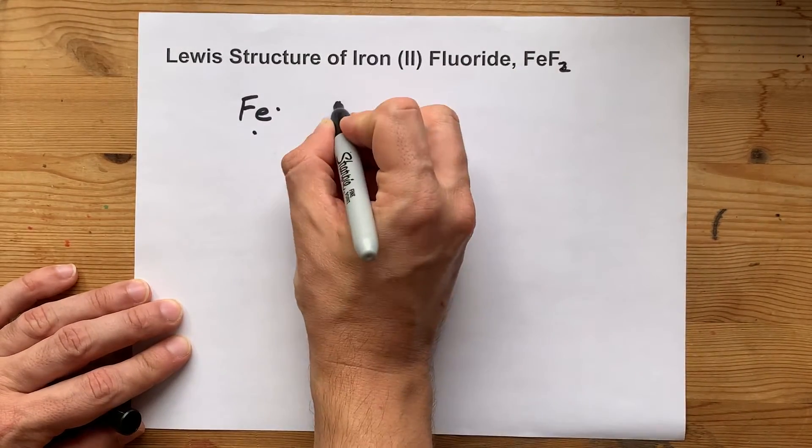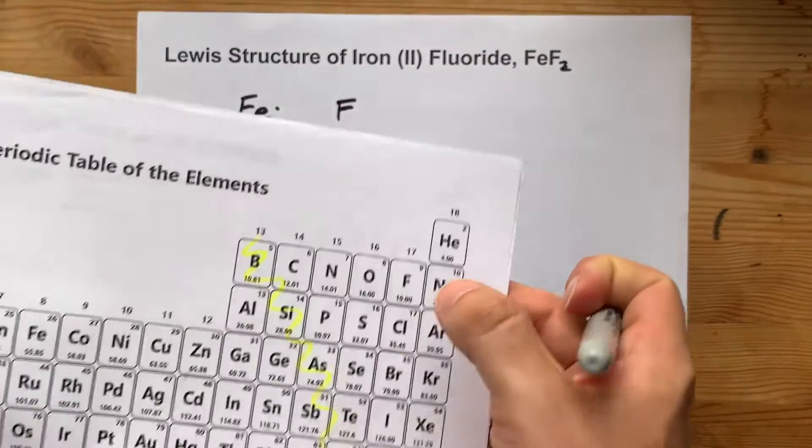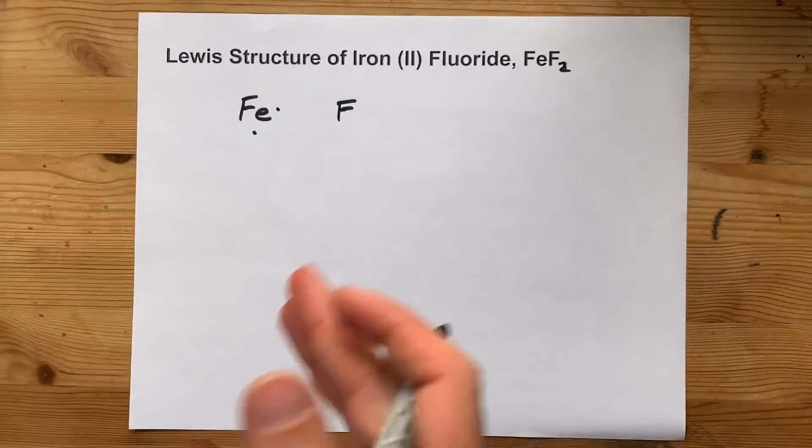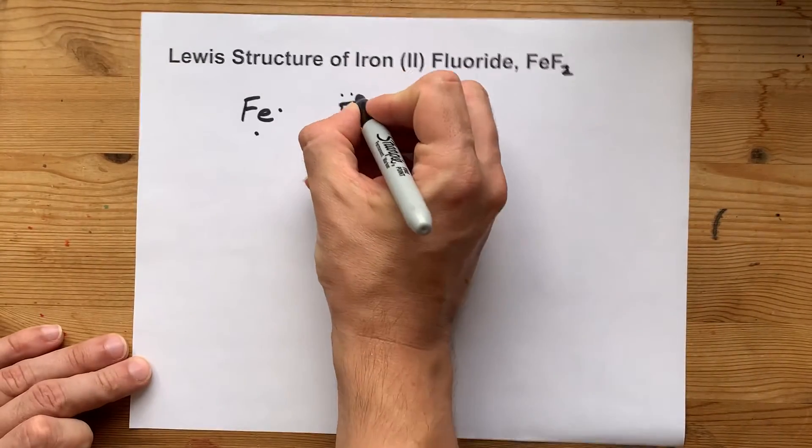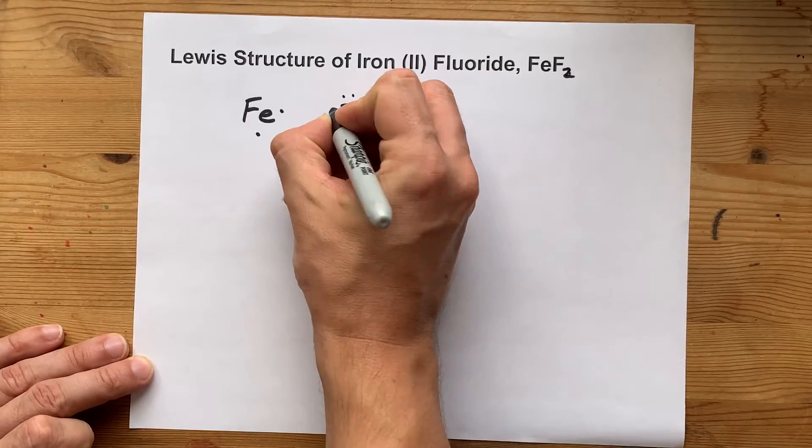Now I'm going to draw myself some fluorines. Fluorines, being in group 17, bring 7 electrons each. 1, 2, 3, 4, 5, 6, 7.